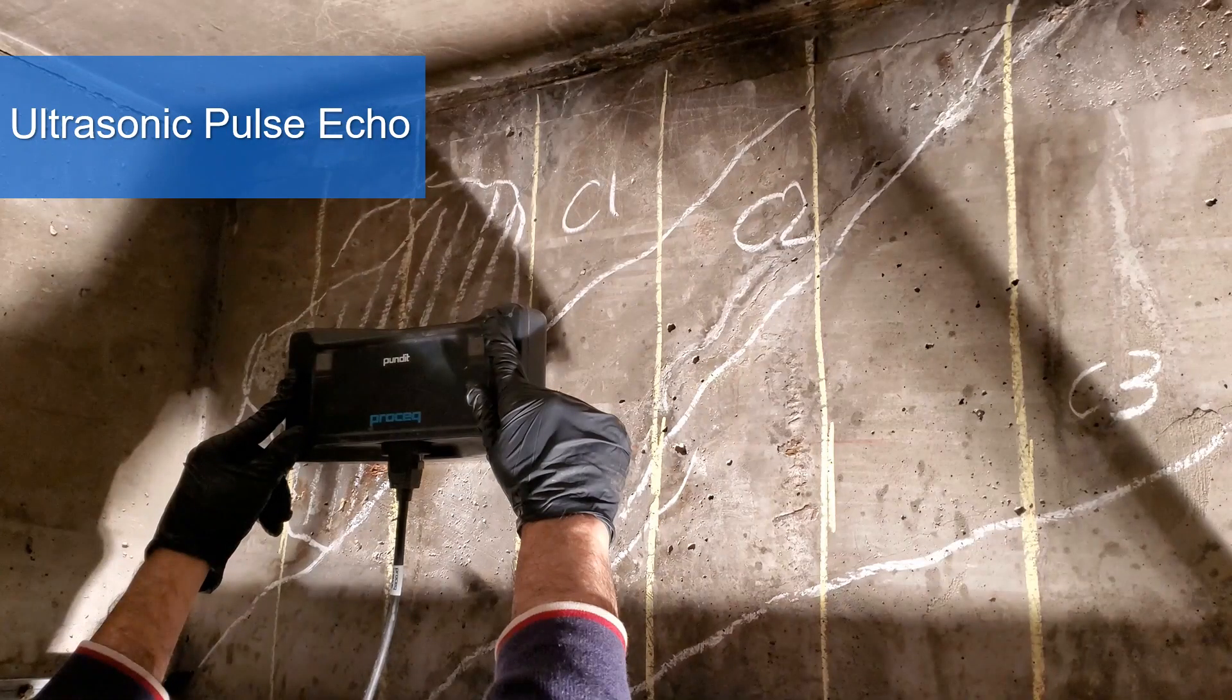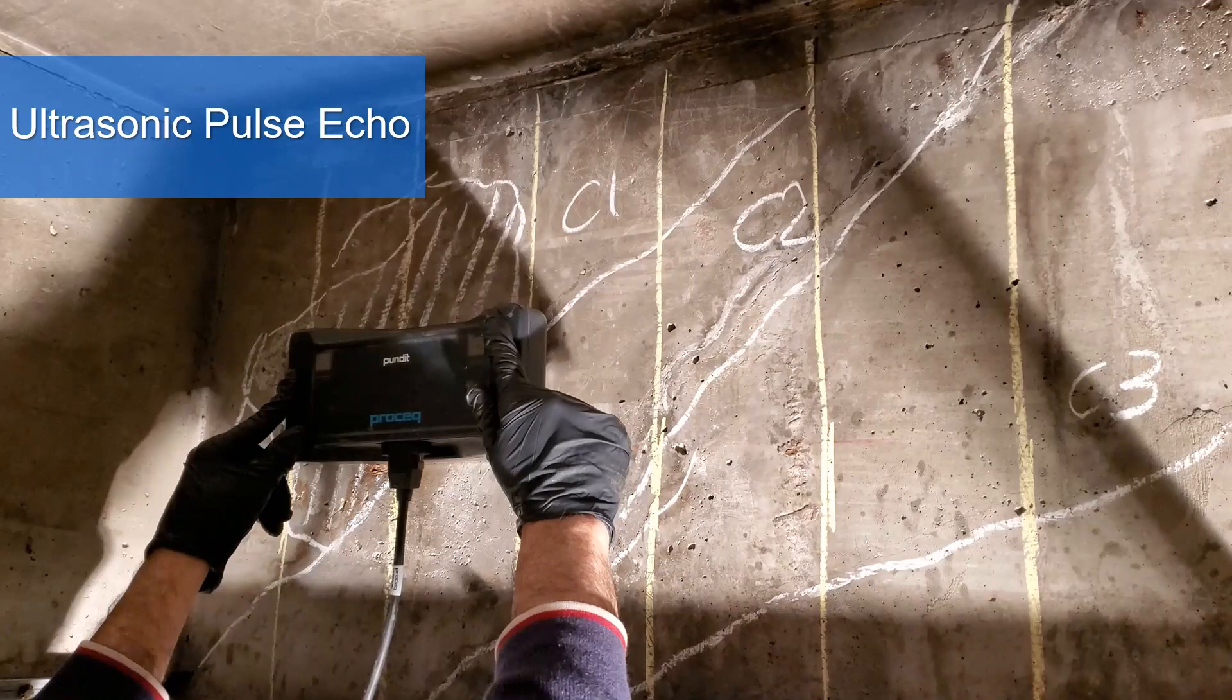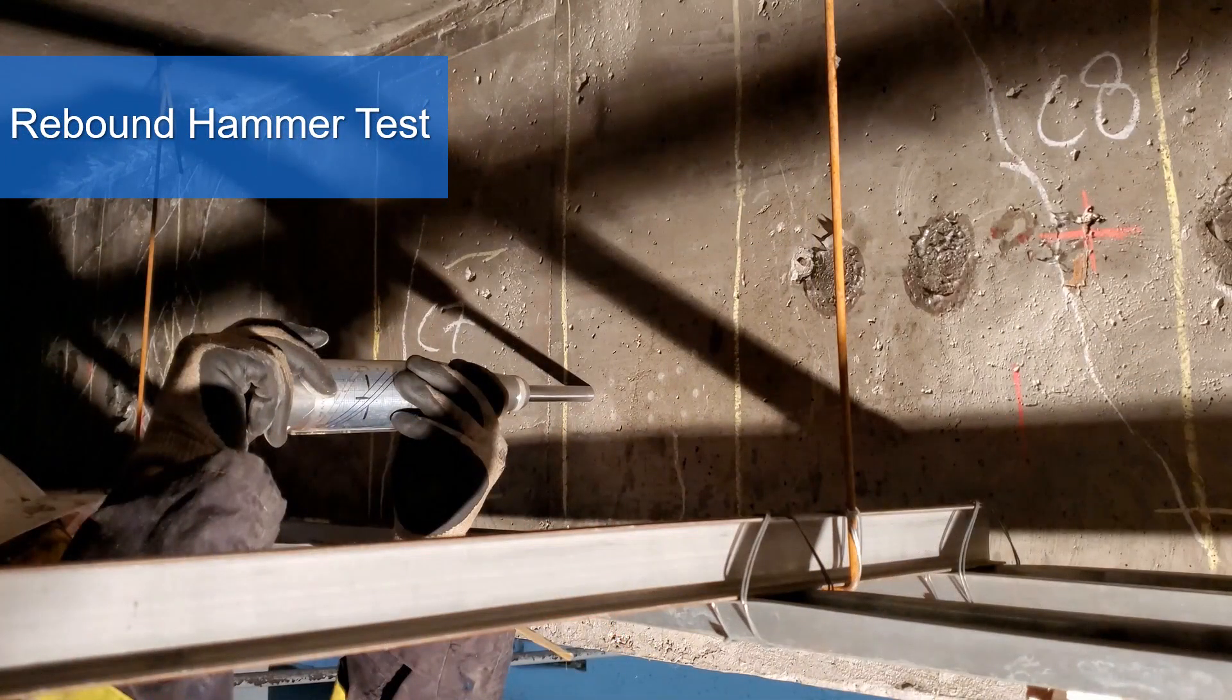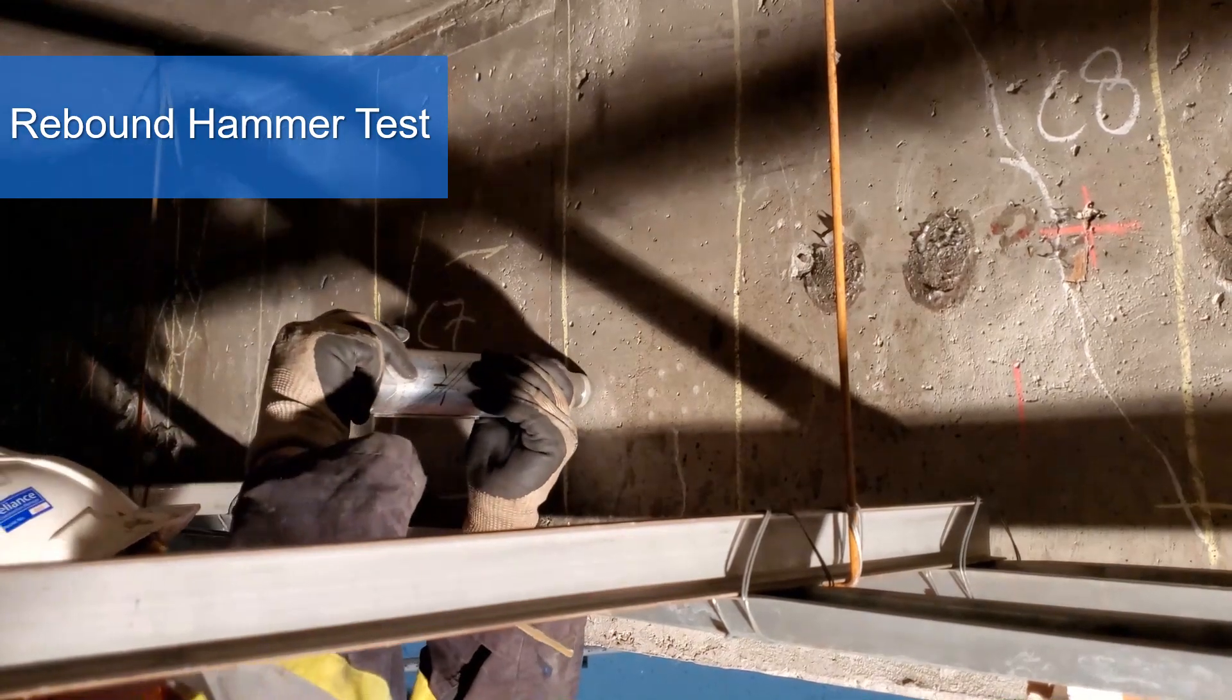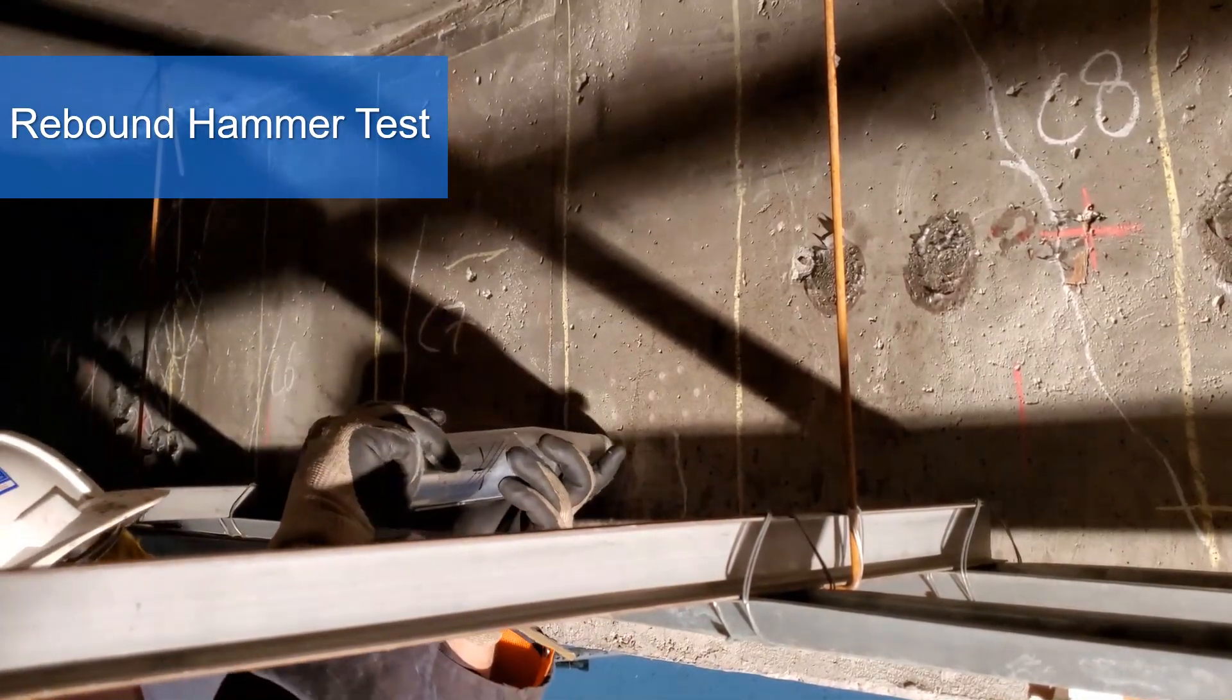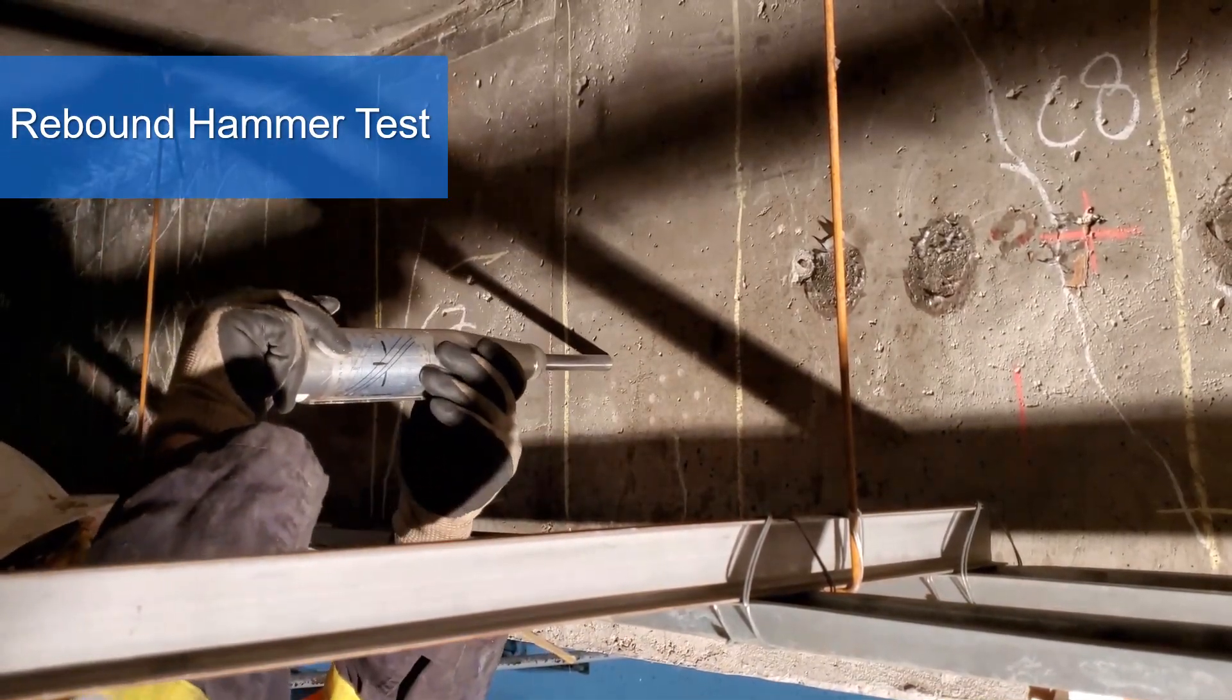Last, but not least, is the rebound hammer test. Rebound hammer or Schmidt hammer can be used to identify weak spots in a concrete element. It can also be used to get an estimate of the compressive strength if a reliable correlation between the compression test and rebound number is established.